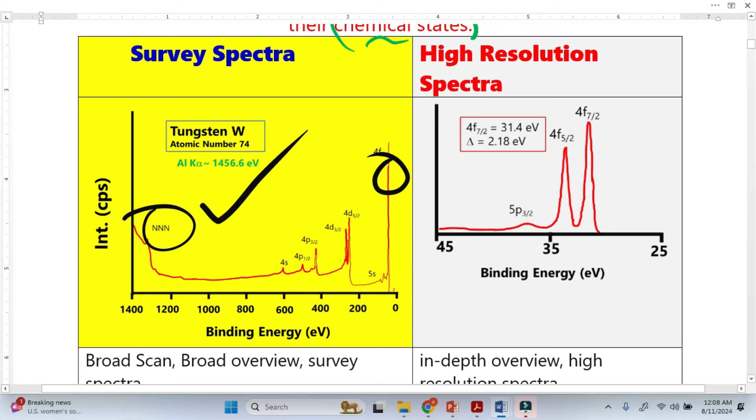In this case, I took this 4f peaks here, and we can simply see that in this 4f peak we cannot see the doublet here. But when we take the high resolution spectra, these doublets become visible and we can see two separate peaks.